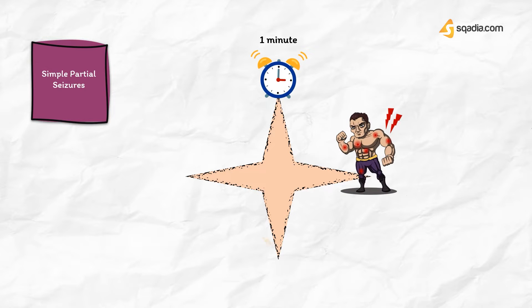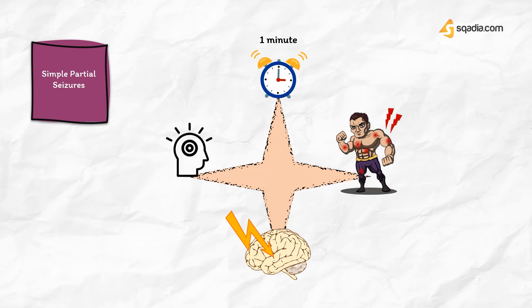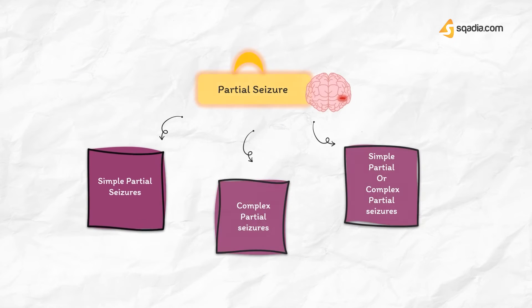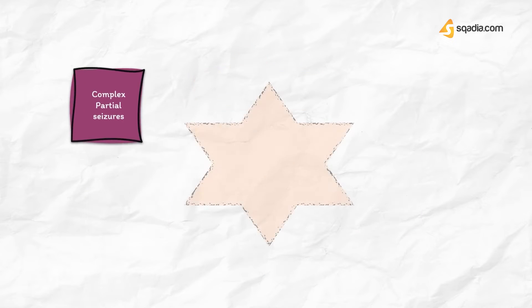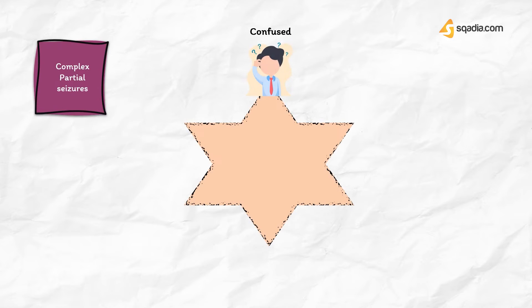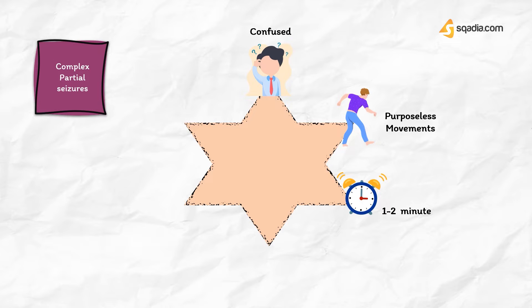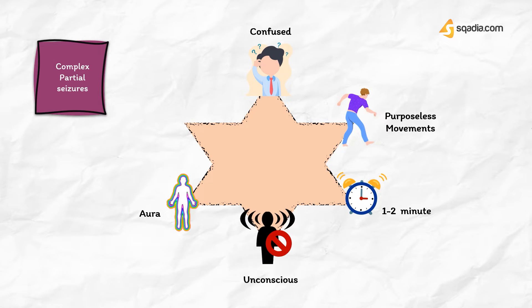Partial seizures include simple partial seizures that last for half a minute to one minute. Convulsions are confined to a group of muscles or localized sensory disturbance depending on the area of cortex involved, without loss of consciousness. The other type is complex partial seizures, which include attacks of bizarre and confused behavior and purposeless movements, emotional changes lasting one to two minutes along with impairment of consciousness. An aura often precedes the seizure.